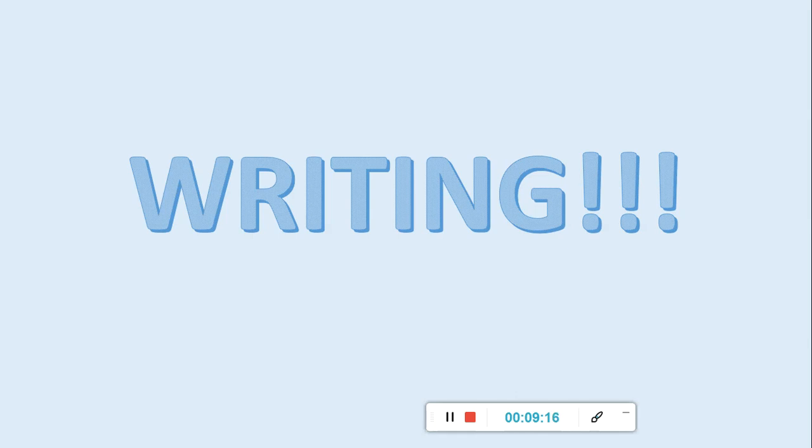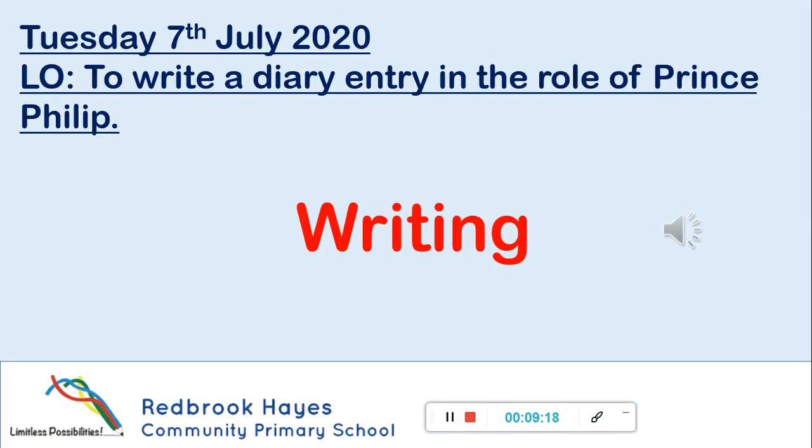On to your writing for today. Good morning, class three and class four. Tuesday, the 7th of July, and I'm here, Miss Cunnington, for your writing lesson again. Today, we're going to have a look at writing a diary entry in the role of Prince Philip. Using your understanding of him yesterday will help us with our diary entry today.